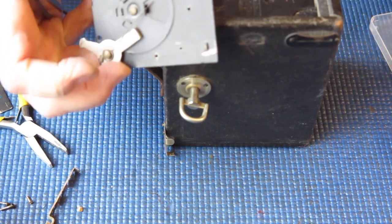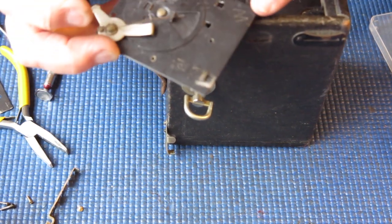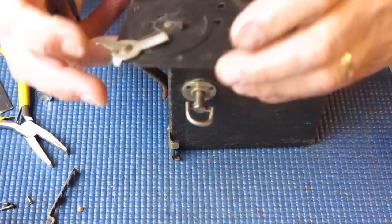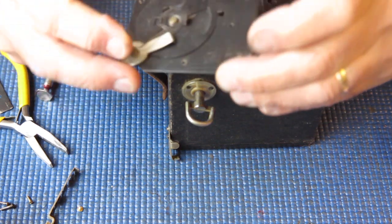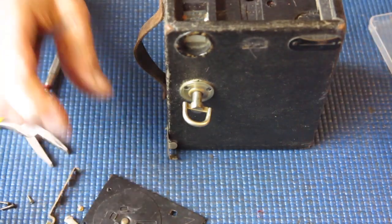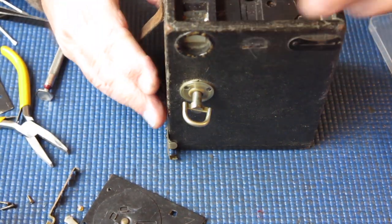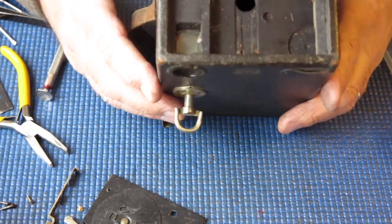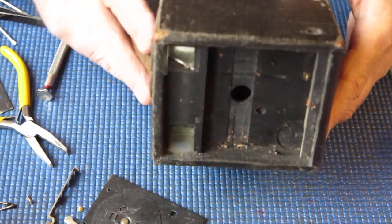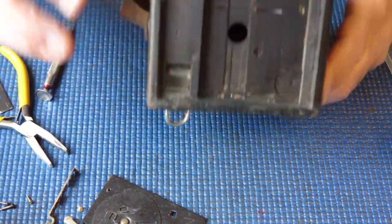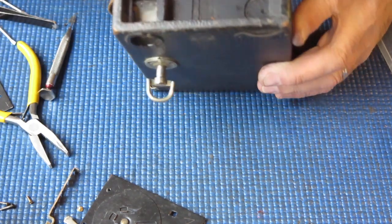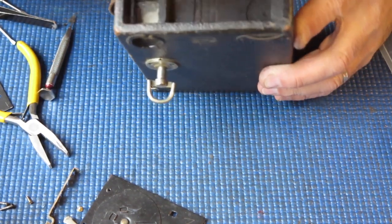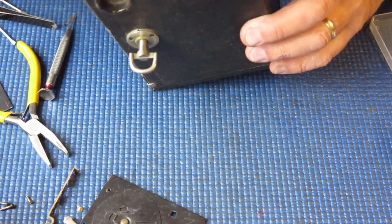Now I notice here it's got a letter scratched in it. It's either an M or a W. Possibly the initial of whoever assembled this thing in the first place. While I've got it at this stage, it's a good time to clean out all this dust and other rubbish that's in here. There's all spiders nests, all manner of rubbish in here.